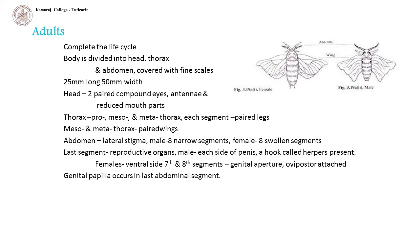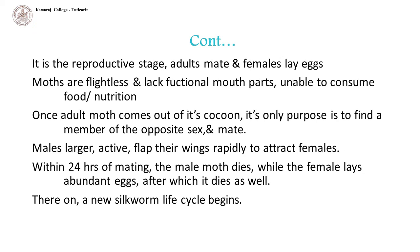The last segment is modified to form reproductive organs. In males, on each side of the penis there is a hook called head pegs. In females, at the ventral side of the 7th and 8th segments, there is a genital aperture to which the ovipositor is attached. Genital papilla occurs in the last abdominal segment. It is the reproductive stage where adults mate and females lay eggs. Moths are flightless and lack functional mouth parts, so are unable to consume food or nutrition.